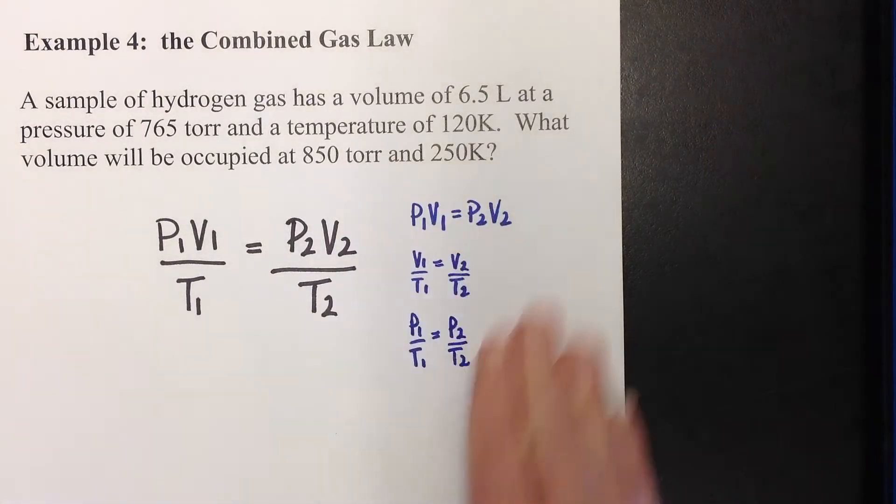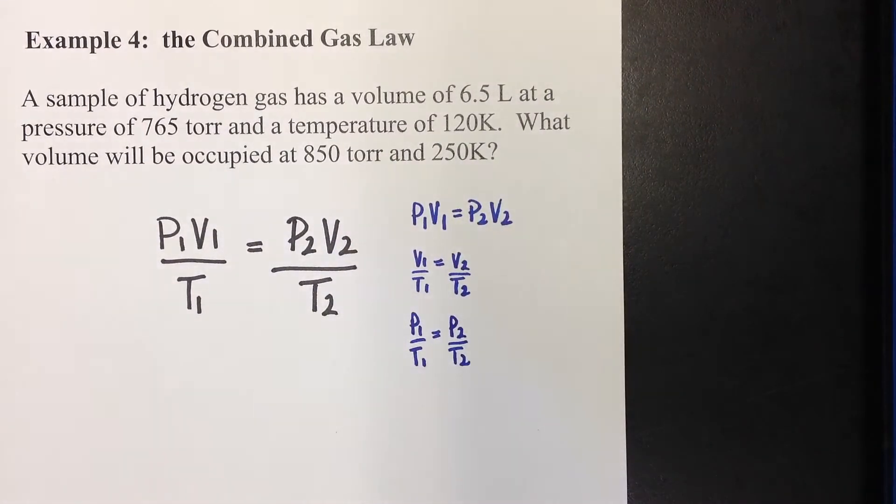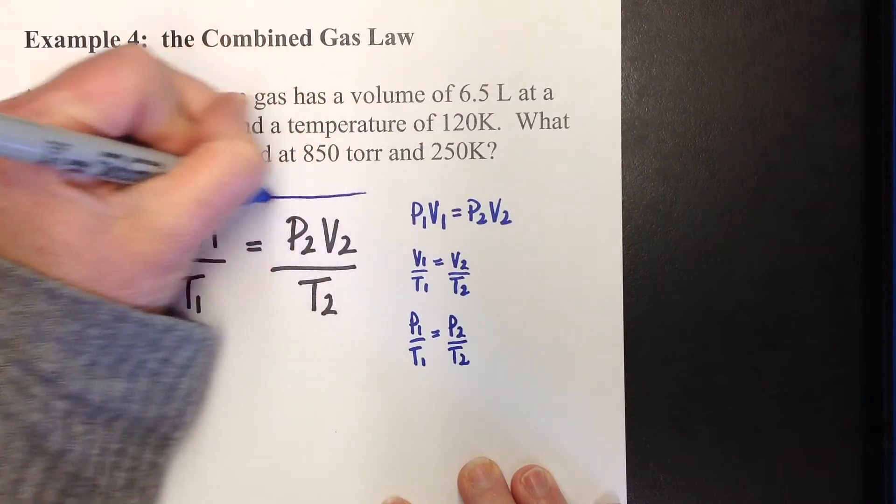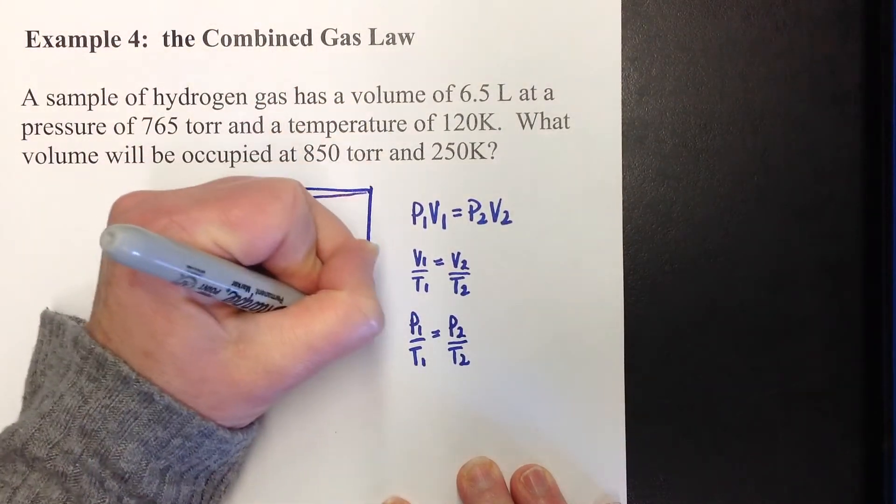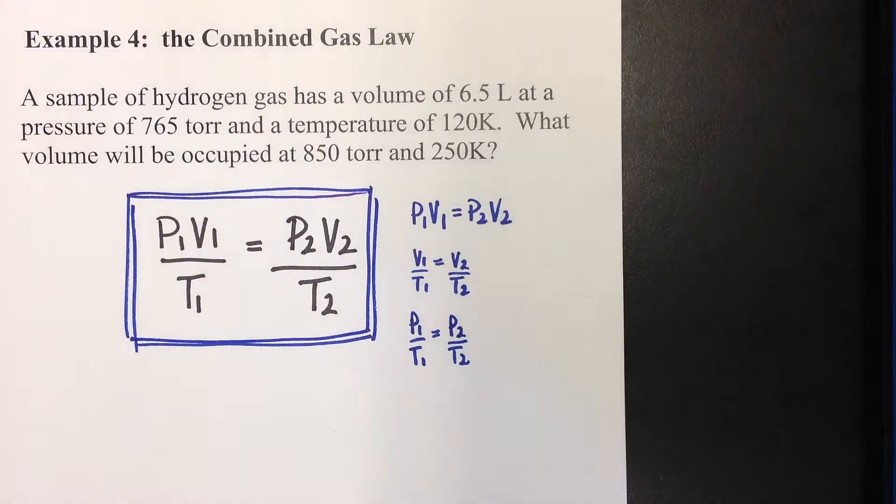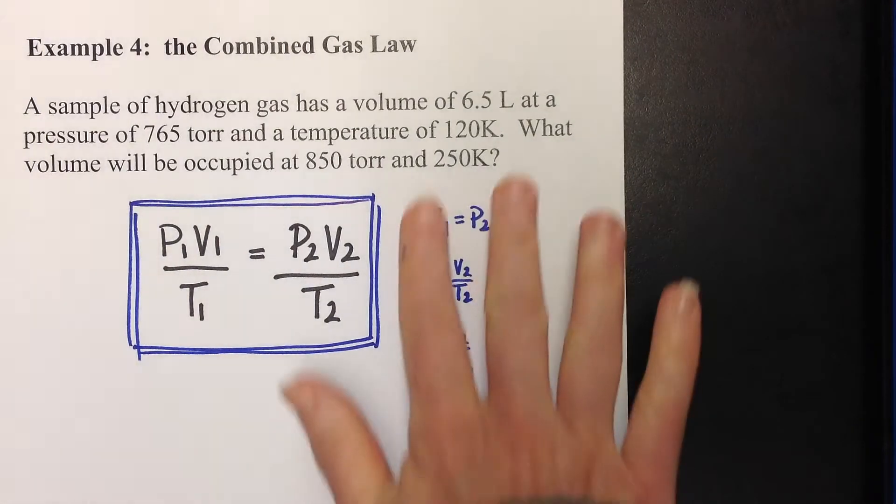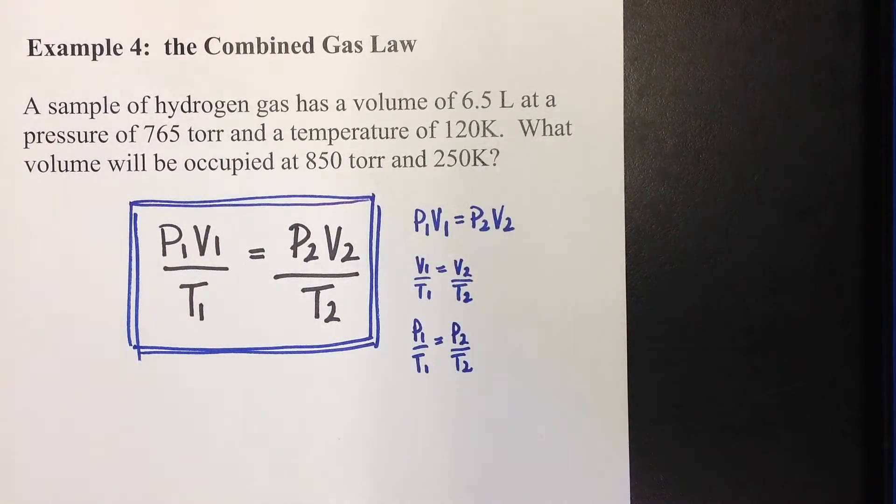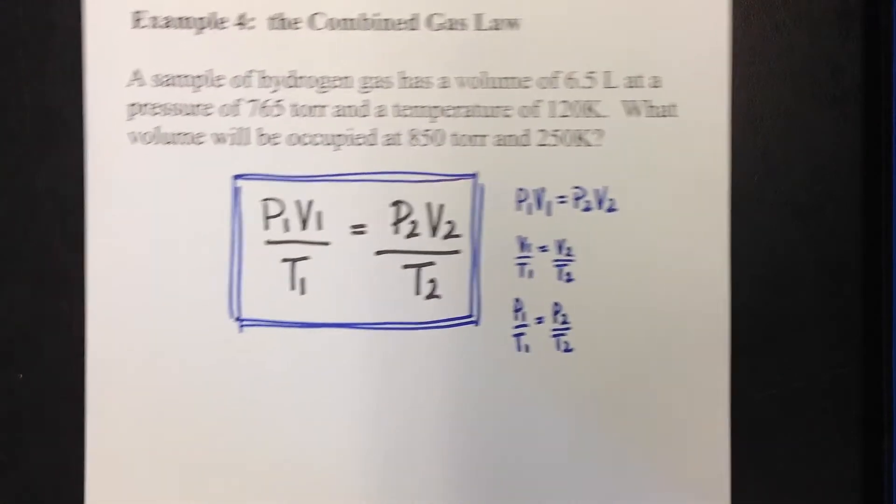It makes sense that if you put all these together, if nothing is held constant, you're going to end up with this nice combined gas law where P's and V's are on the top, T's are on the bottom, ones are on the left, twos are on the right. Honestly, if you know this gas law, you can always remember the other three. So it's just an easier way to do things.